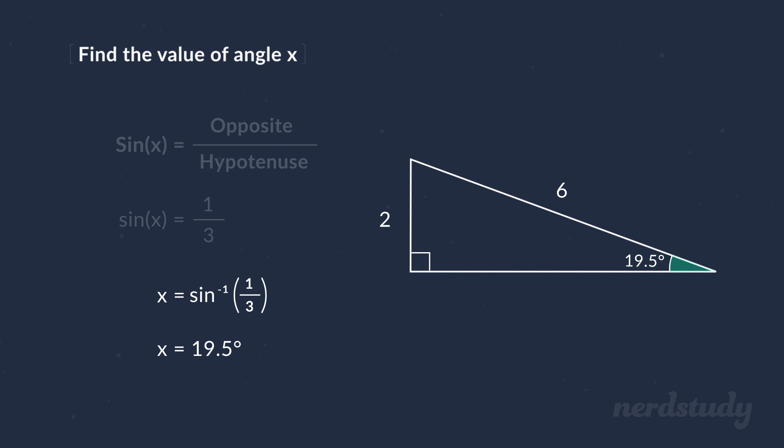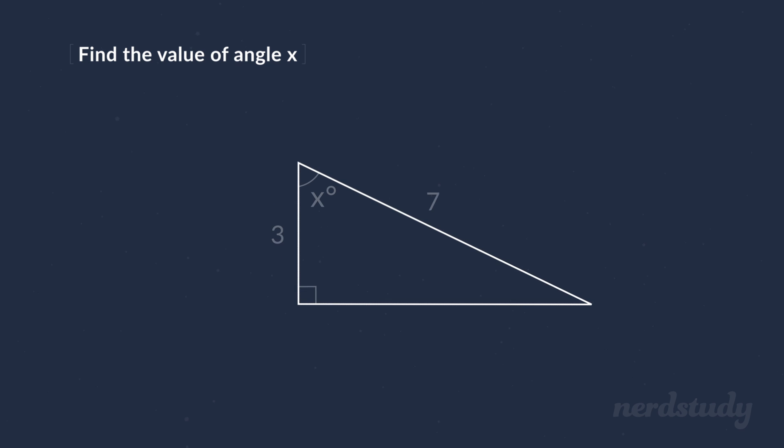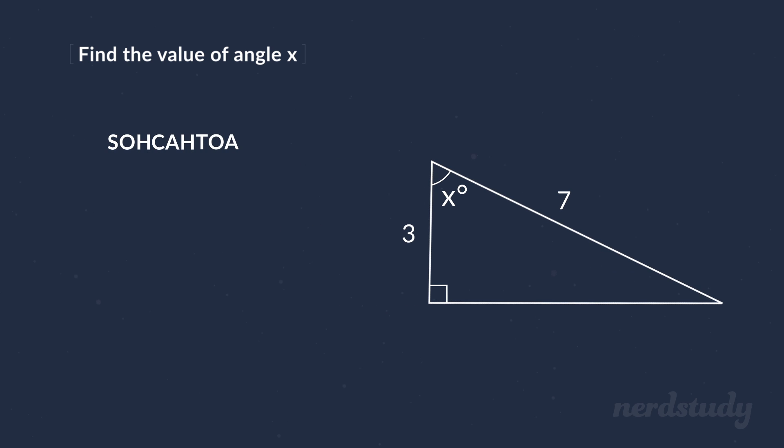So you might be thinking, is there an inverse of cosine then? The answer is yes. So in this example, we are not looking to use the sine function. Instead, we're looking to use the cosine function, since if you memorized SOHCAHTOA, then you would know that the CAH here stands for cosine of x, which is equal to adjacent over hypotenuse. And as you can see in this example, we're dealing with a side adjacent to the angle, and a hypotenuse.